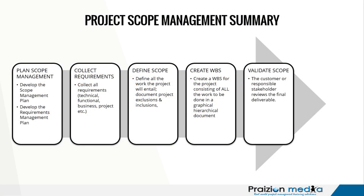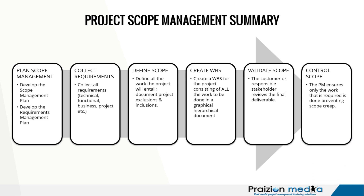After Validate Scope, the next process is Control Scope. In Control Scope, the PM ensures only the work that is required is done. Someone might ask: isn't that the same as Validate Scope? No. Validate Scope is an inspection. Control Scope is a check — like the Plan-Do-Check-Act cycle. You're checking to ensure that the work, not the deliverable, but the work being done is indeed the work that should be done. And if anyone has deviated from that, you should investigate and correct as needed.